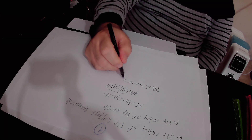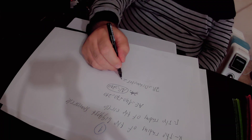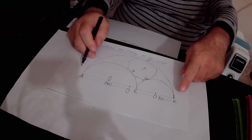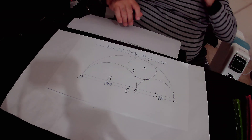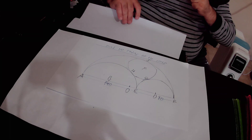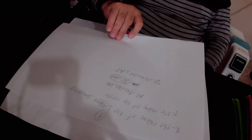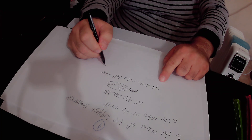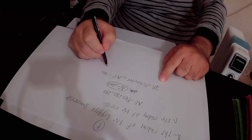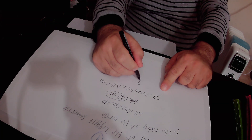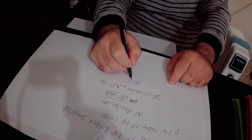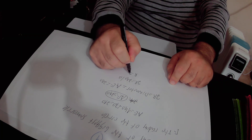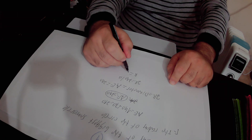Line segment AE is the diameter that is equal to 210 units. From this equation we derive that 2 times capital R equals 210 units. We divide this equation by 2, and we get that capital R equals 210 over 2, which is 105 units.